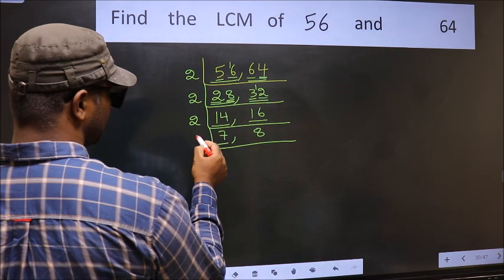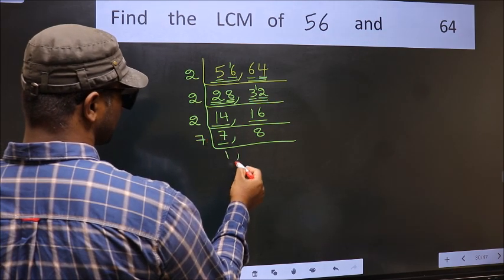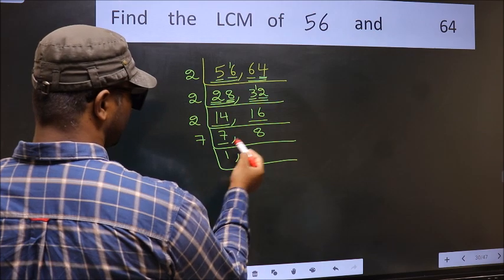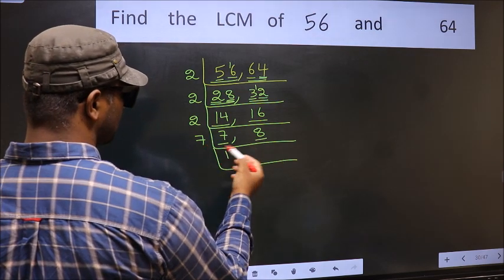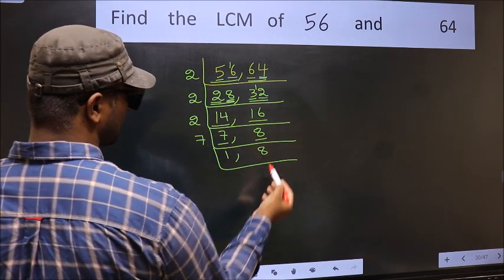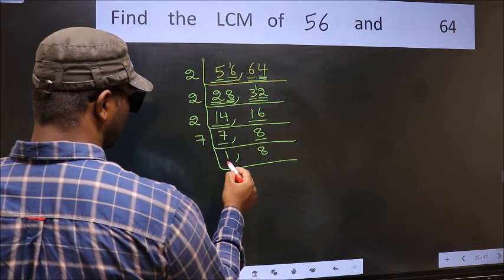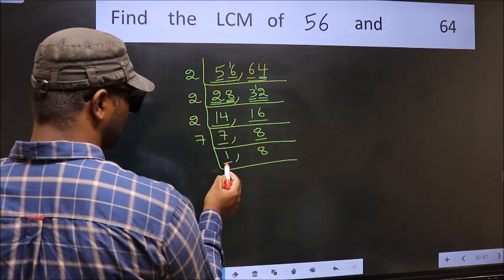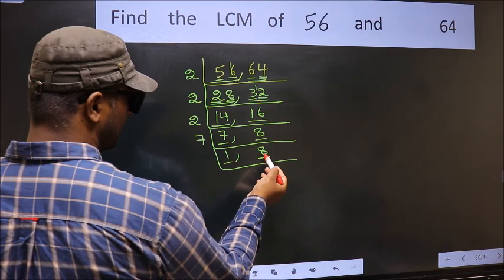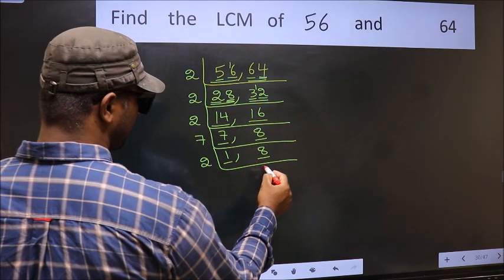Now here we have 7. 7 is a prime number. So 7 times 1 is 7. The other number 8, not divisible by 7, so you write it down as it is. Now we got 1 here, so focus on the other number 8. 8 is 2 times 4 is 8.